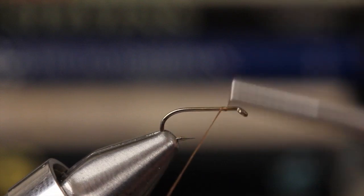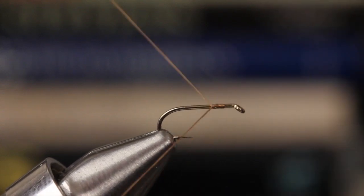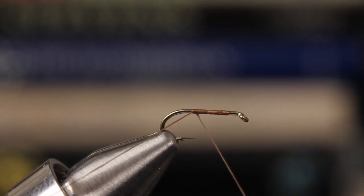Start your thread on the hook shank, leaving a hook eye length space behind the eye. Stop with your thread at about the hook point.